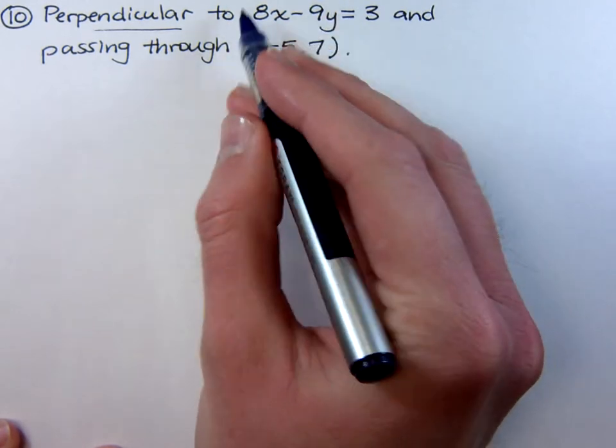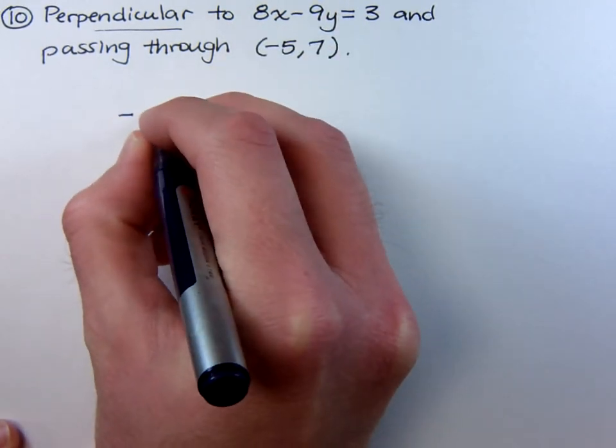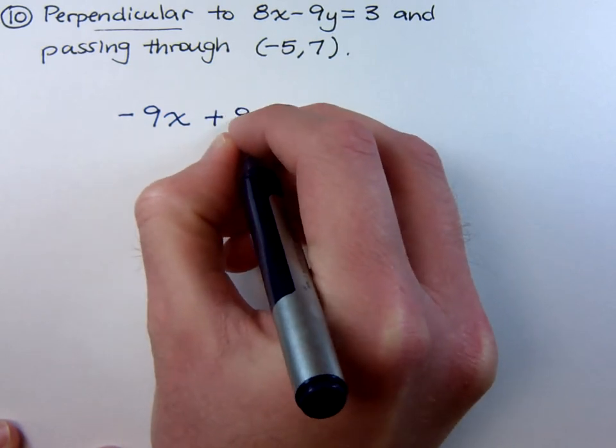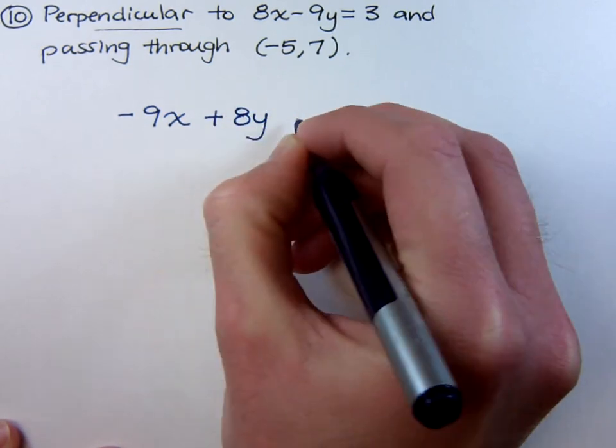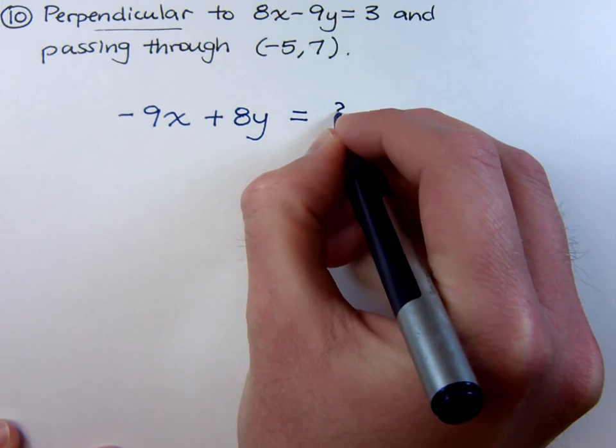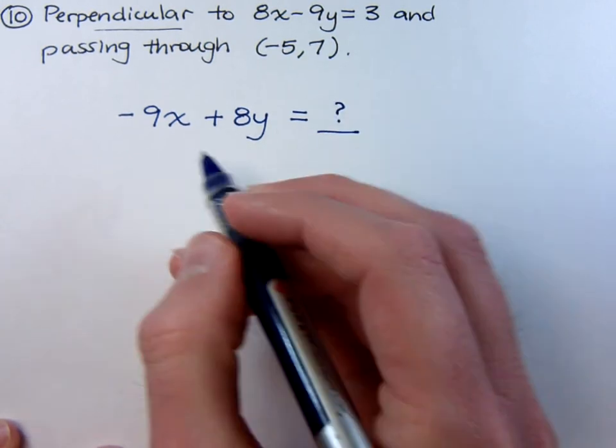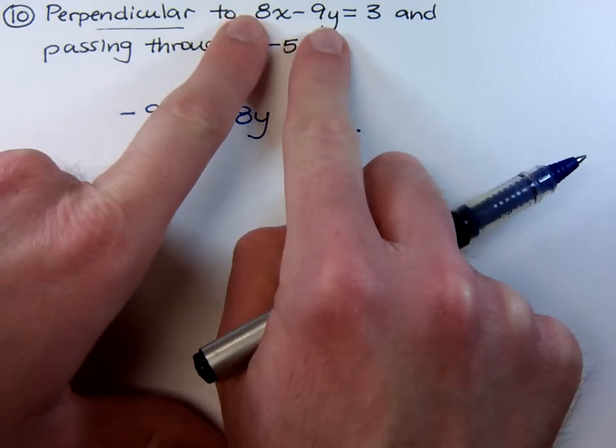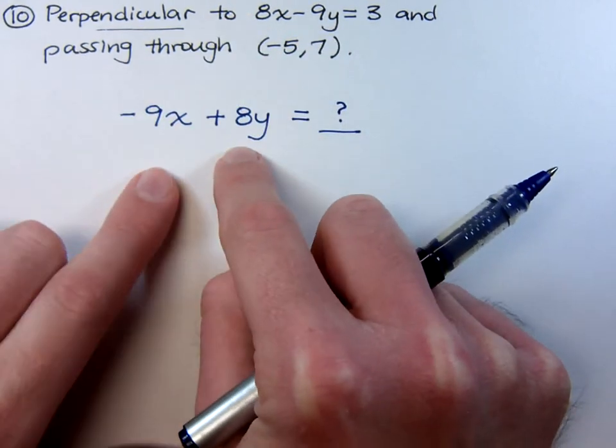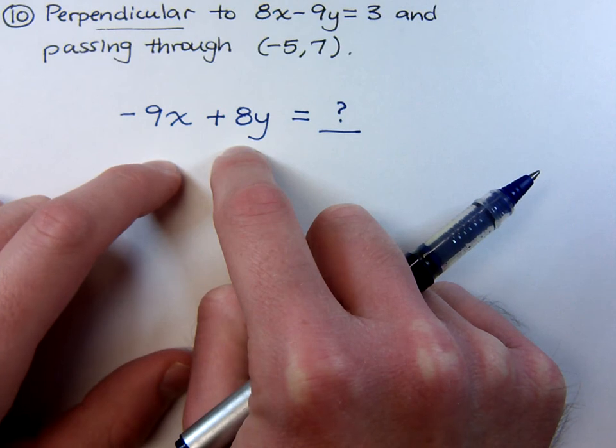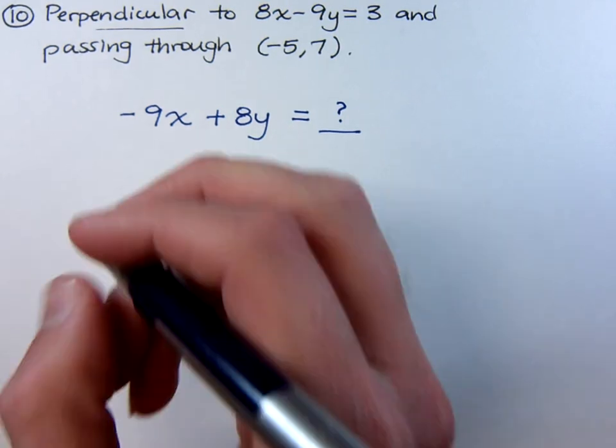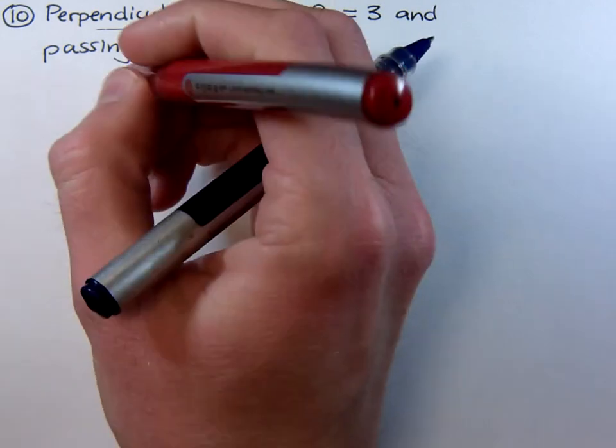Now, if I just flip these coefficients around and I make this -9x and a positive 8y, and of course I've got to figure out what is this number over here. Just by switching the coefficients from what I had up here will only give me the reciprocal in terms of our slopes. In order to get the negative reciprocal, I have to change the sign of one of these guys.